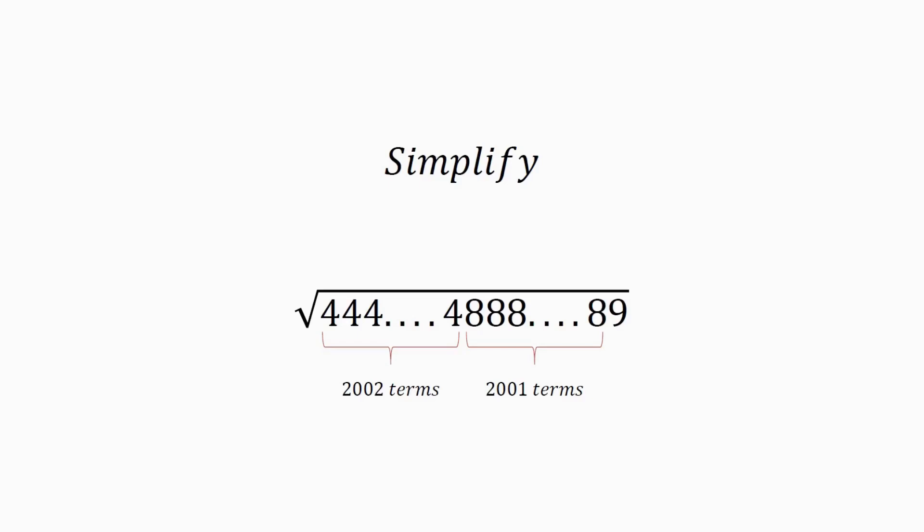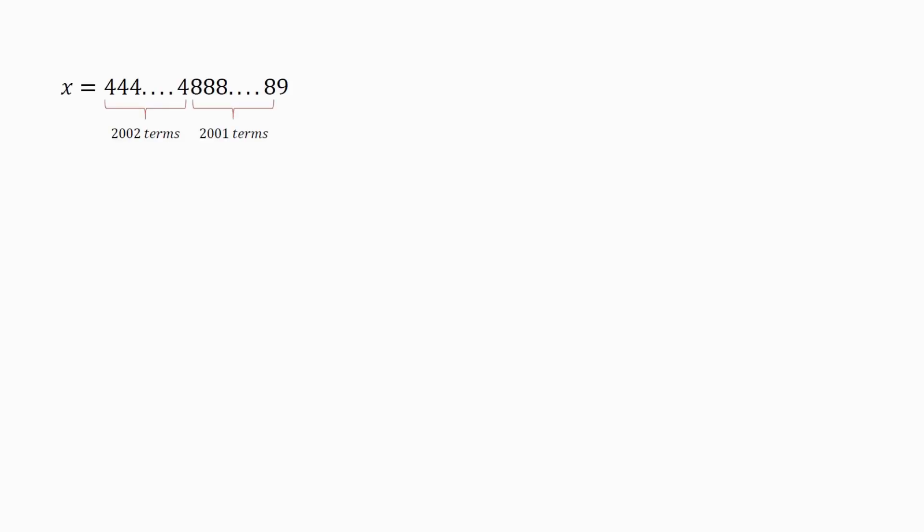Hello everyone. Simplify the number: square root of 2000 1s followed by 2001 8s followed by 9. We can assume x equals the number inside the square root for the sake of explanation. Before solving the problem, we are discussing a simple technique which is used to solve this problem.